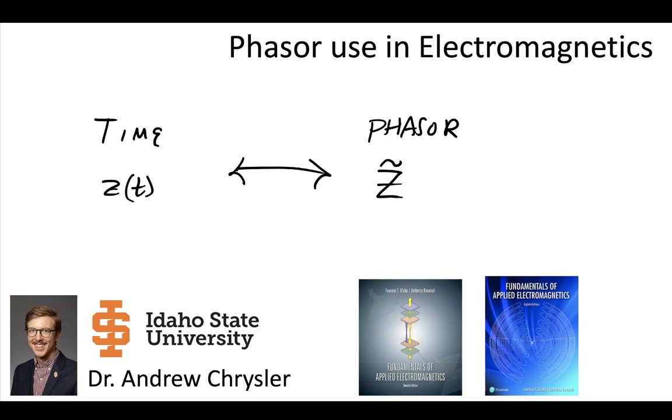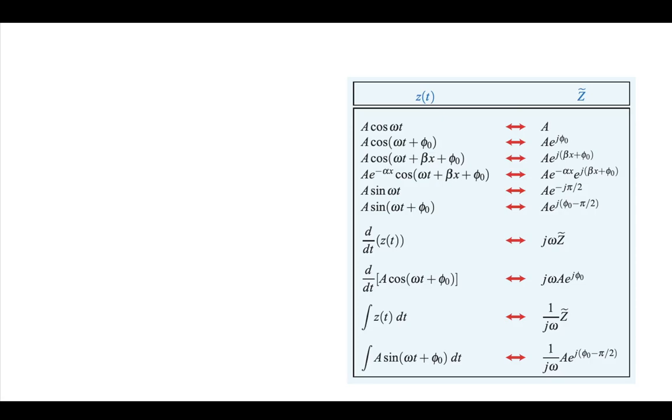Now you might want to be able to convert between time domain and phasor domain. In the previous video we saw that we could take a time-dependent sinusoidal source or traveling wave that's time-dependent and spatially dependent, and convert back and forth between the instantaneous form of the wave and the phasor form.